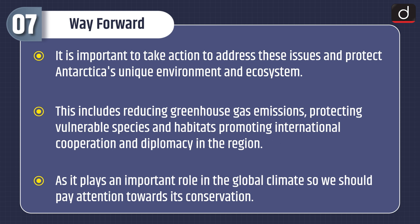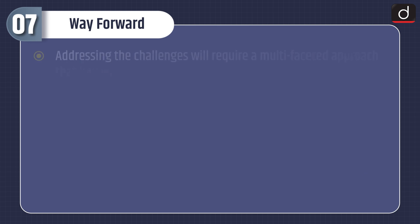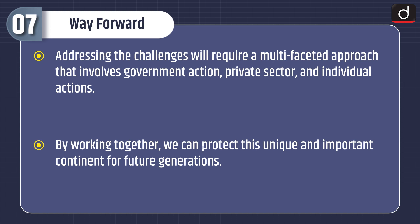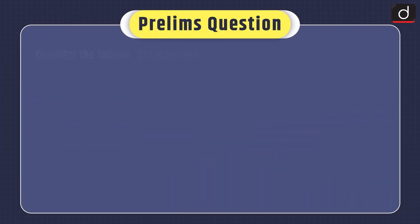It is important to take action to protect Antarctica's unique environment and ecosystem. This includes reducing greenhouse gas emissions, protecting vulnerable species and habitats, and promoting international cooperation and diplomacy in the region, as Antarctica plays an important role in global climate. Addressing these challenges requires a multi-faceted approach involving government action, private sector engagement, and individual action — working together to protect this continent for future generations.